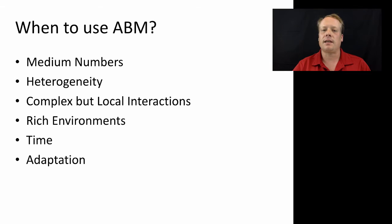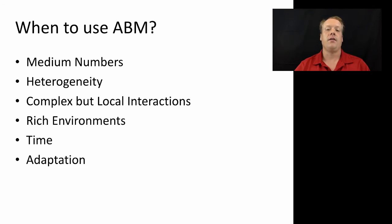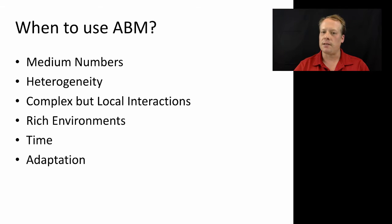There are essentially six indicators. The first four — medium numbers, heterogeneity, complex but local interactions, and rich environments — are indicative of when you might want to use agent-based modeling. In other words, the more of these that a system possesses, the more likely it is that agent-based modeling will provide you with a good solution to understanding that system.